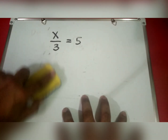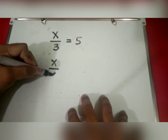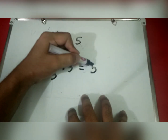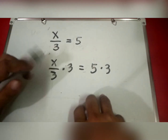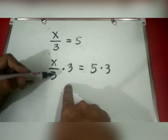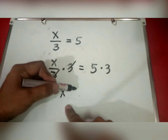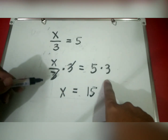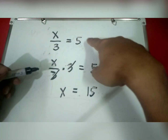So let us try multiplying by 3 on both sides. We have x over 3 times 3 equals 5 times 3. One-third times 3 equals 1, and 1 times x is x — we cancel out the 3. On the right side, 5 times 3 is 15. So x equals 15. To check: 15 divided by 3 equals 5. Correct!